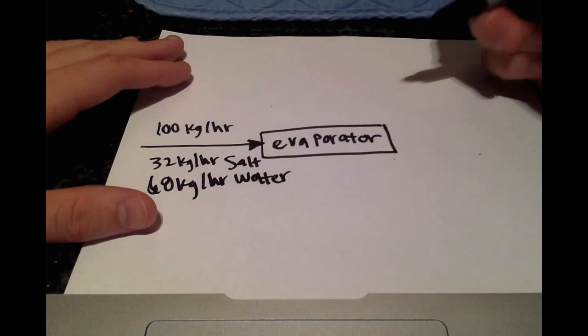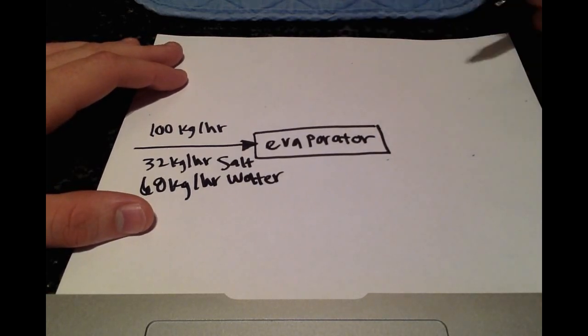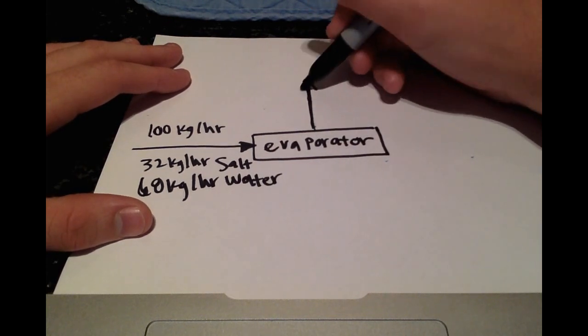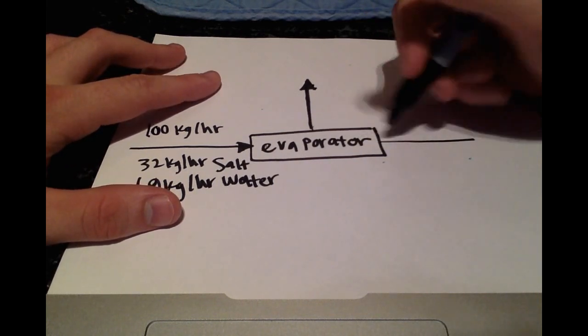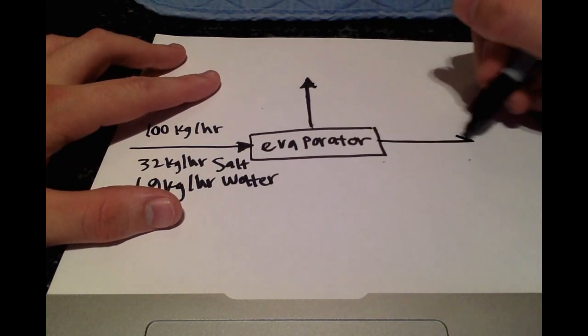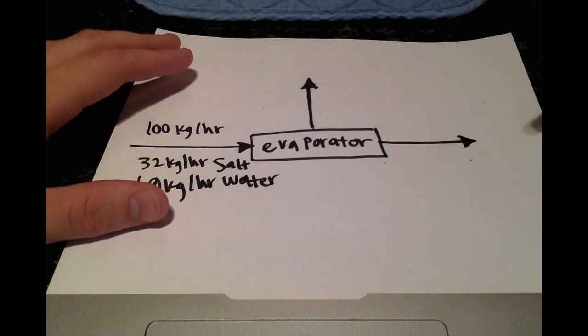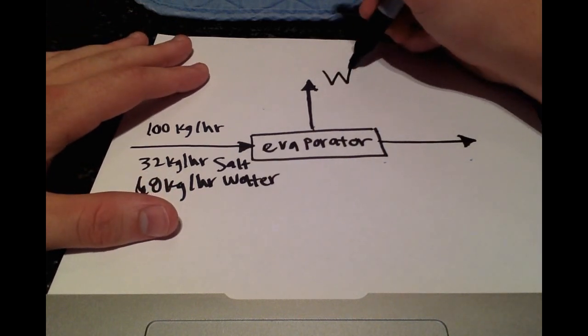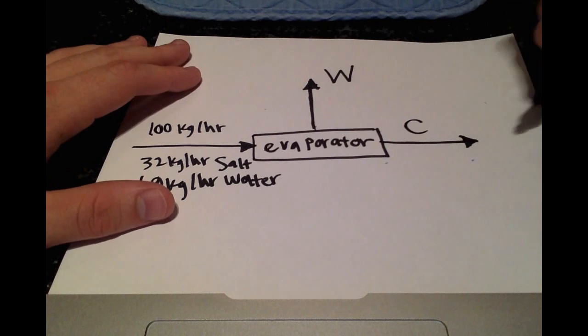Okay, and we know that we have two streams coming out. We have the water vapor that's being evaporated, and then we also have the other stream here that is a combination of water and salt. So let's write just a capital W for water and a capital C for concentrated solution.